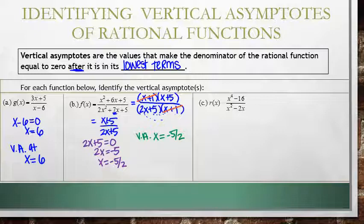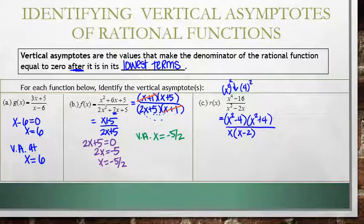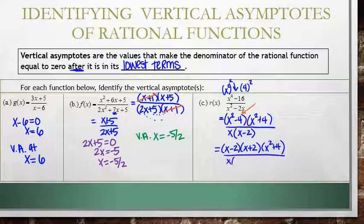For letter C, we first simplify. The numerator is a difference of perfect squares: x squared squared minus 4 squared, which factors into x squared minus 4 times x squared plus 4. We can factor an x out of the denominator, leaving x times x minus 2. The term x squared minus 4 is also a difference of perfect squares, factoring further into x minus 2 times x plus 2. The term x squared plus 4 does not factor further, giving us x minus 2 times x plus 2 times x squared plus 4, all over x times x minus 2.